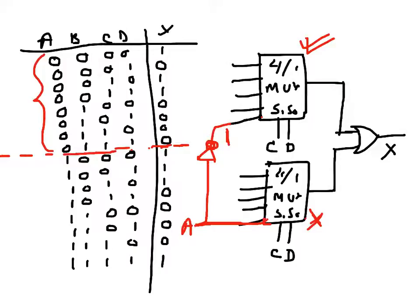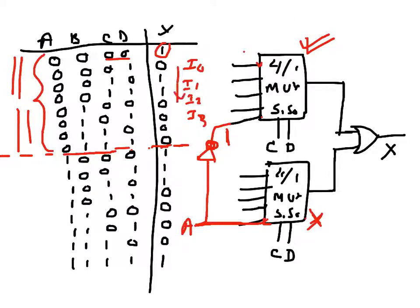Now I will look at this first part and see how I can relate the output with B. For the first input — zero-zero — I am calling them I0, I1, I2, I3 going downwards. Looking at I0 and I1, the output is one when B is zero and zero when B is one, so this input has to be B-bar.